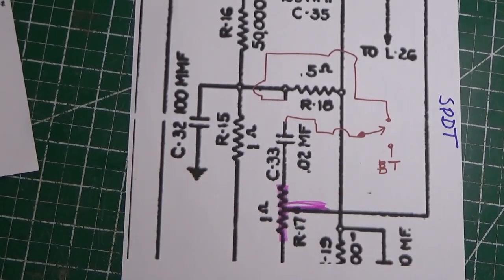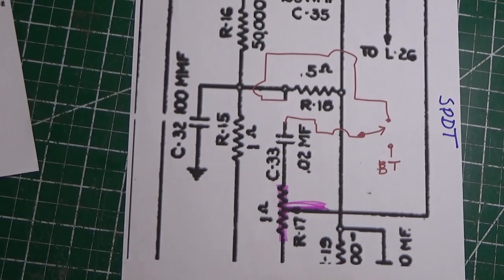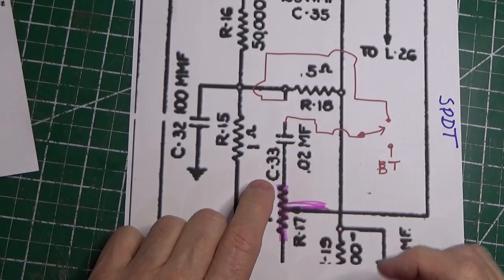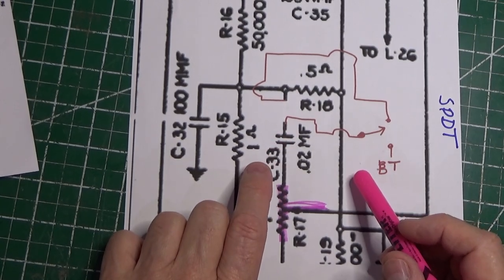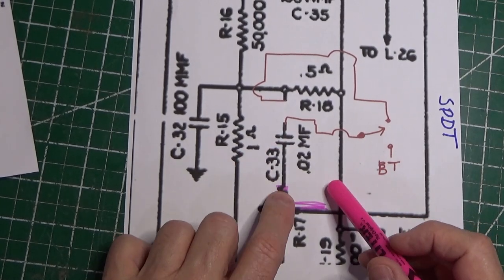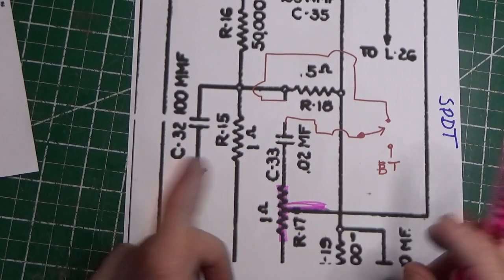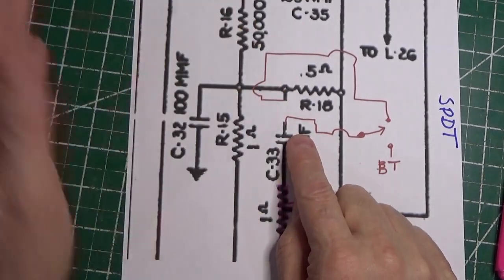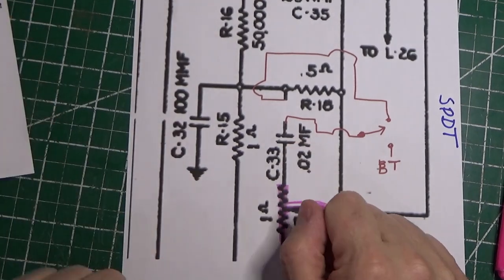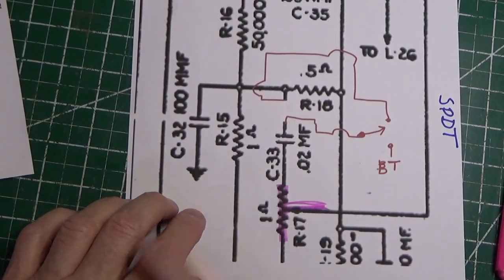You can see it. What you want to do is you want to take a look at the capacitor that's connected to one end of the volume control. Now on some radios it's going to be a 0.1. On this radio it's a 0.02, but essentially this is the connection that connects it to the radio, to this side of the radio.